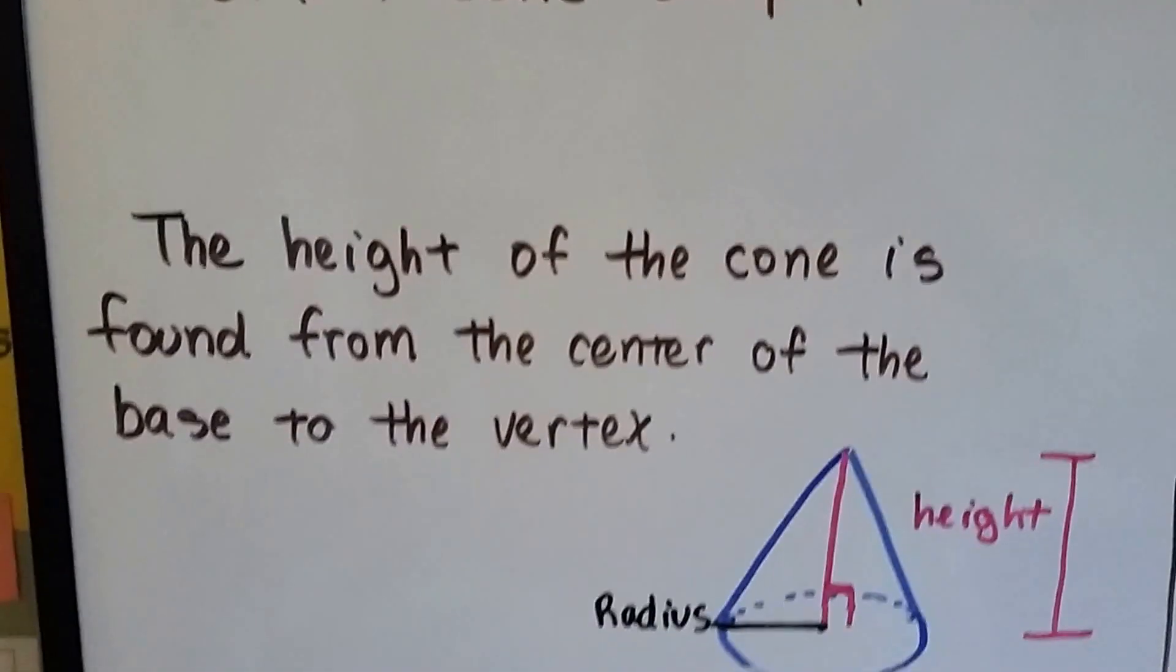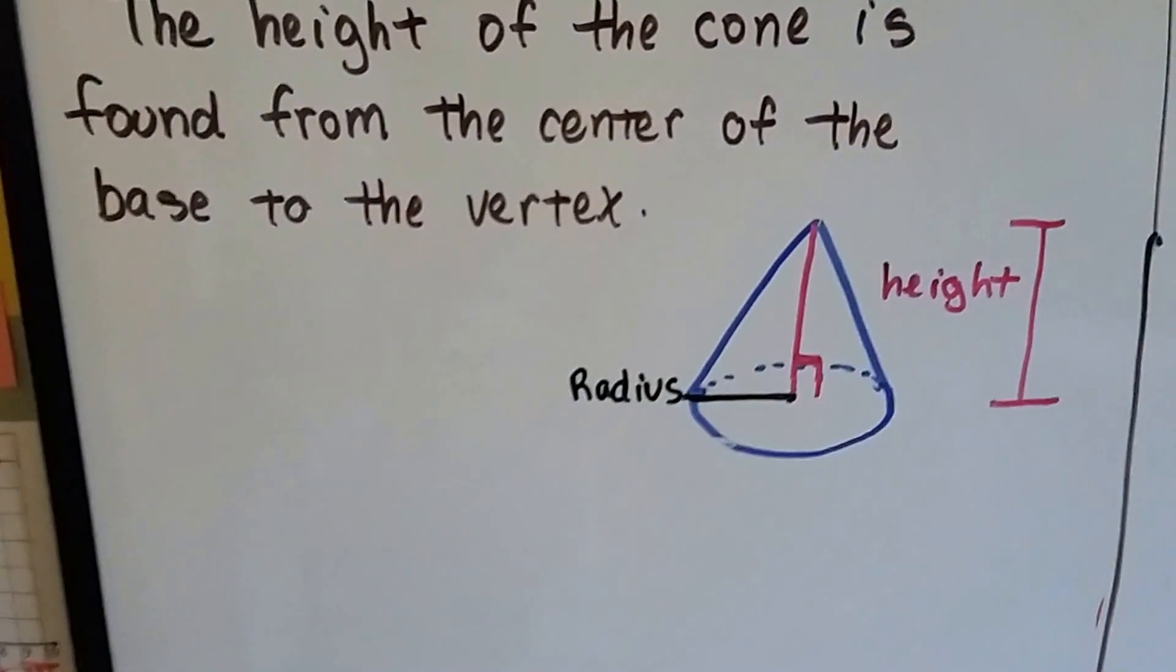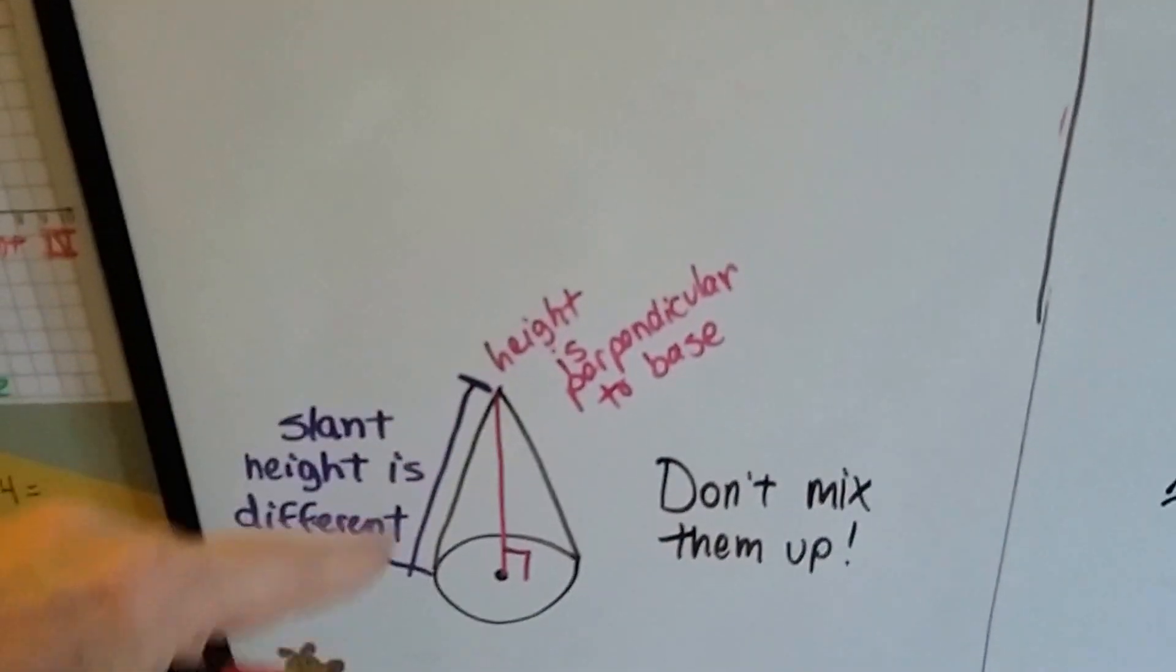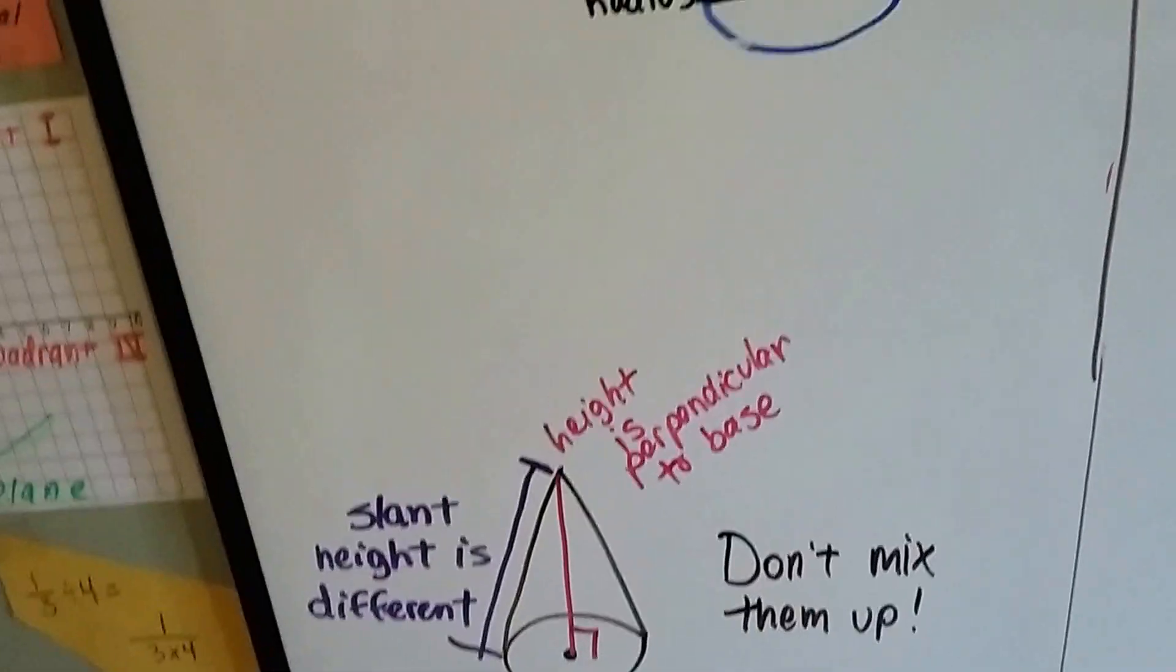And the height of a cone is found from the center of the base to the vertex, so the very center here straight up. We've got our radius and we've got our diameter. And don't confuse this slanted side as the height. That's the slant height. The real height's perpendicular to the base.